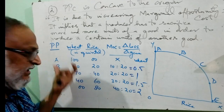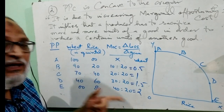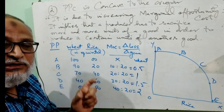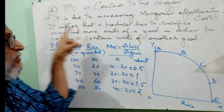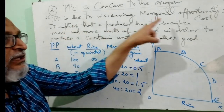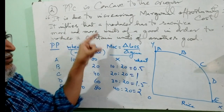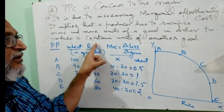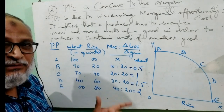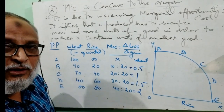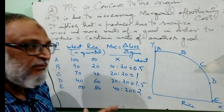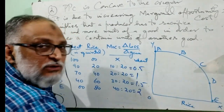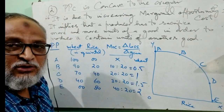It is because we are sacrificing more and more units of one good to produce more quantity of another good. So this is the law — why PPC is concave and why MOC will always increase. It is due to increasing marginal opportunity cost. It implies that a producer has to sacrifice more of one commodity to produce more of another, because resources are limited and he is doing full utilization of all resources. You can also see this in the diagram. This PPC, which is concave to the origin, shows full employment and full utilization of the resources.